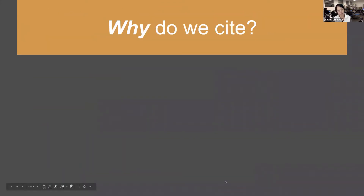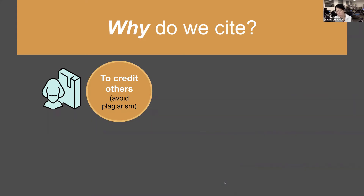So why do we cite? There are a lot of reasons. One reason is to credit others — you want to be able to say that some of these ideas are coming from other people. One reason you do it is because you don't want to play it off as your own. That is called plagiarism, and that is not permitted in any kind of academic writing. It's very serious here at CI. If you plagiarize, you can get an F in your class, and ultimately, if it's really bad, be expelled from school.